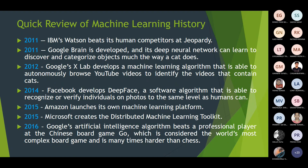In the year 2011, IBM's Watson beat its human competitor at Jeopardy. In the same year 2011, Google Brain was developed based on the Deep Neural Network and is used to learn to discover and categorize objects much the way a cat does.